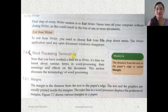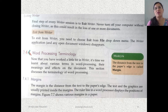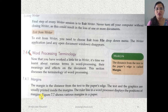Word processing terminologies: first, margin — the distance from the text to the paper edge is called a margin. There is always a space between the text and the edge of the paper. Text and graphics are usually printed inside the margin. The rulers in a word processor display the position of the margin, and you can decrease or increase the margin.